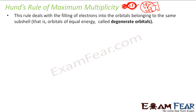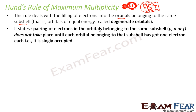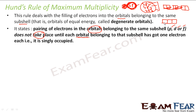Hund's rule deals with filling electrons in degenerate orbitals — orbitals of the same energy within a subshell. It states that pairing of electrons in orbitals belonging to the same subshell (p, d, or f) does not take place until each orbital in that subshell has got one electron.